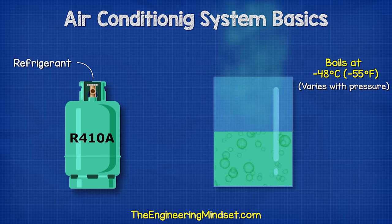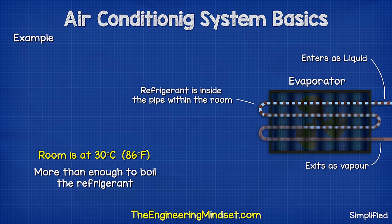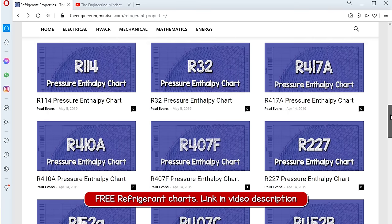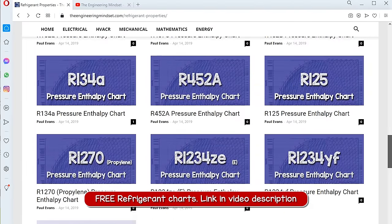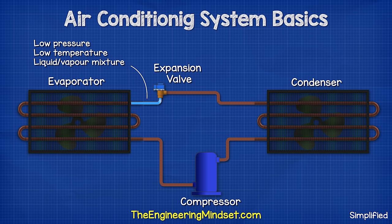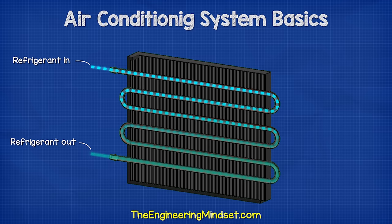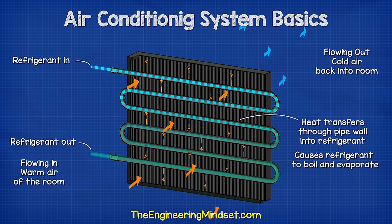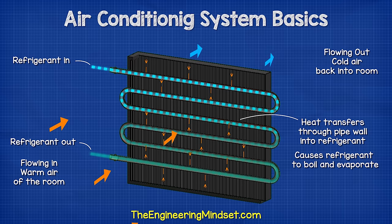But if the refrigerant is inside a pipe within a room and the room is at 30 degrees Celsius or 86 degrees Fahrenheit, then this will be more than enough to cause it to boil from a liquid into a vapour. So the refrigerant is entering the evaporator as a low pressure, low temperature, liquid vapour mixture. It flows on the inside of the pipe, and at the same time, a fan is moving the ambient air of the room over the outside of the pipe. This causes the refrigerant to boil.